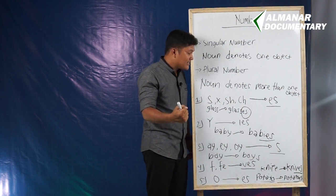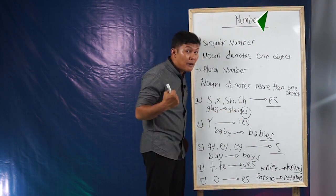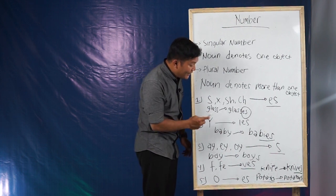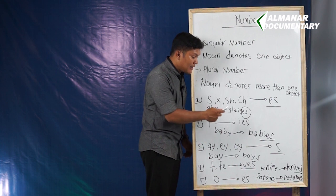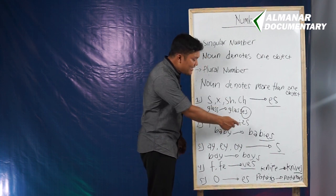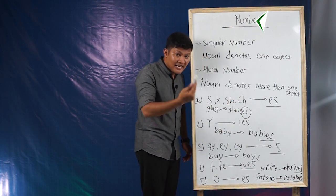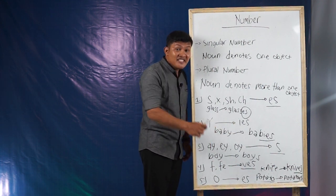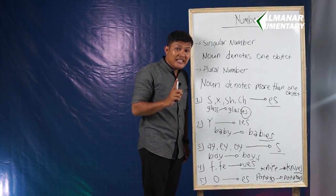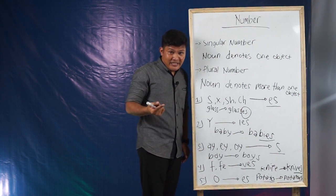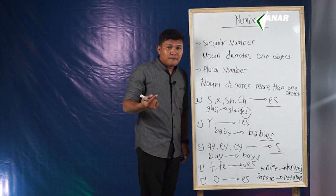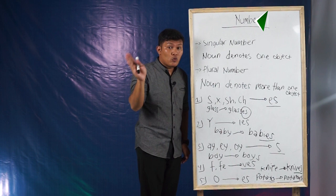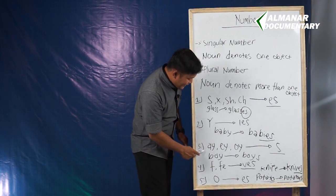Akhiran CH seperti 'punch' (satu pukulan) menjadi 'punches' dengan menambahkan ES. Lalu yang kedua, jika akhiran dari singular number adalah Y, maka kita hanya perlu mengubahnya menjadi IES. Contoh: 'baby' (satu bayi) berubah menjadi 'babies'.